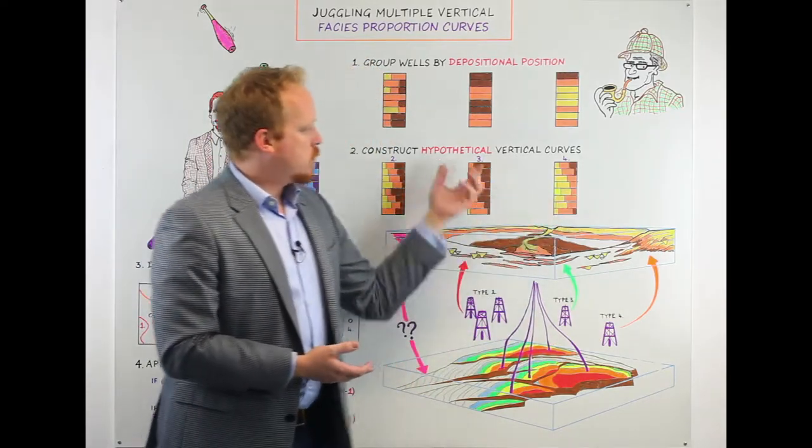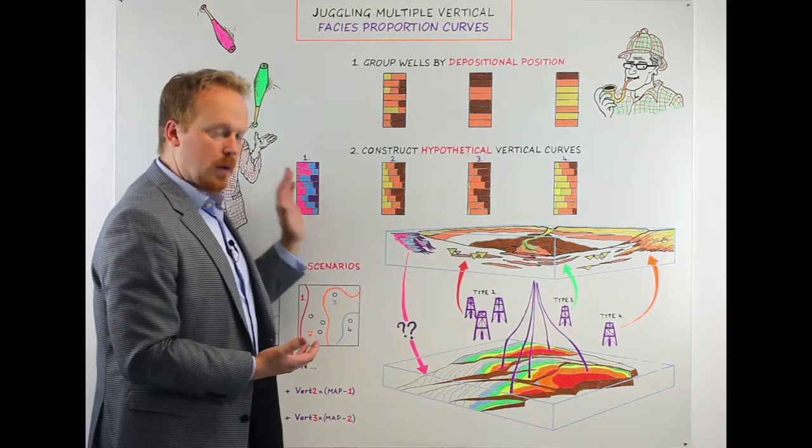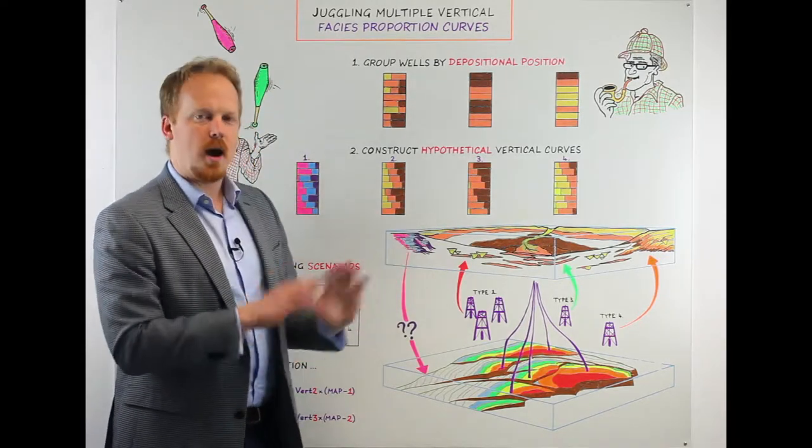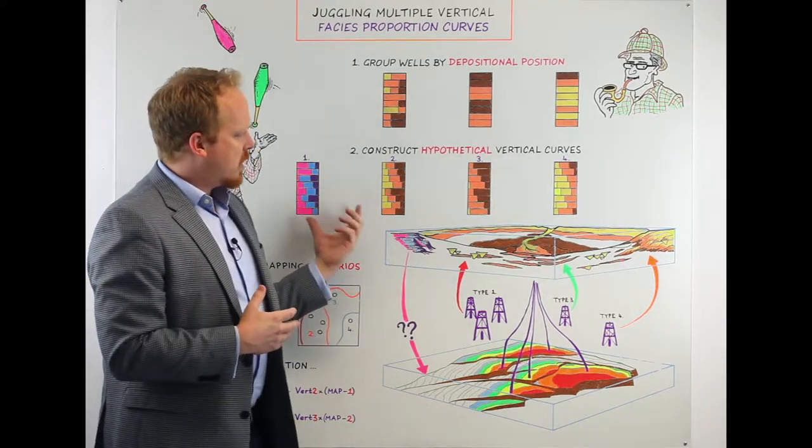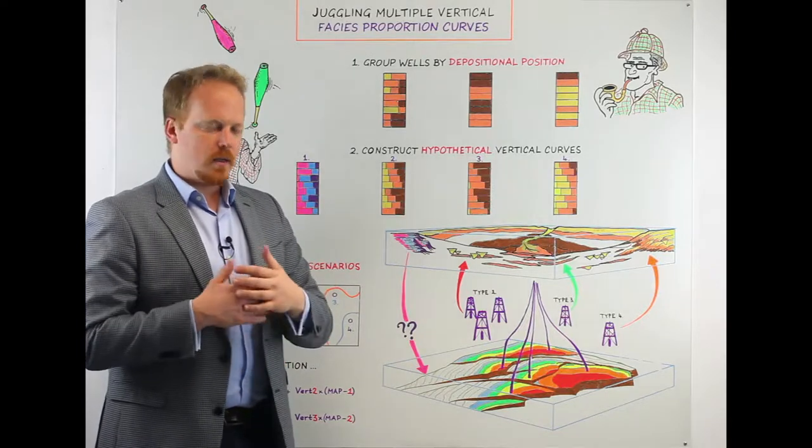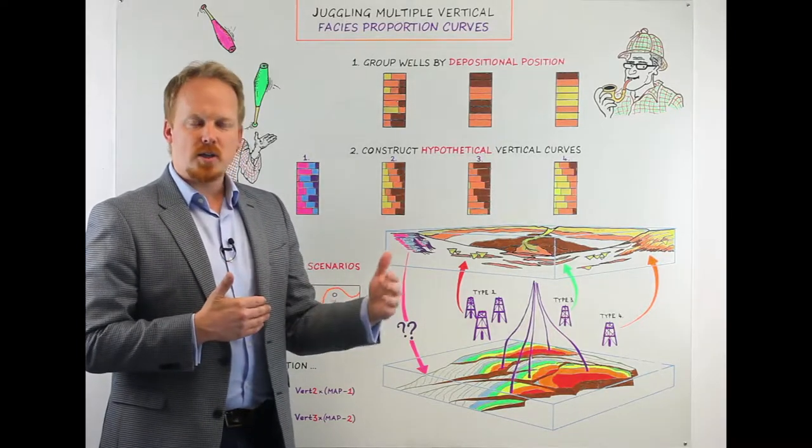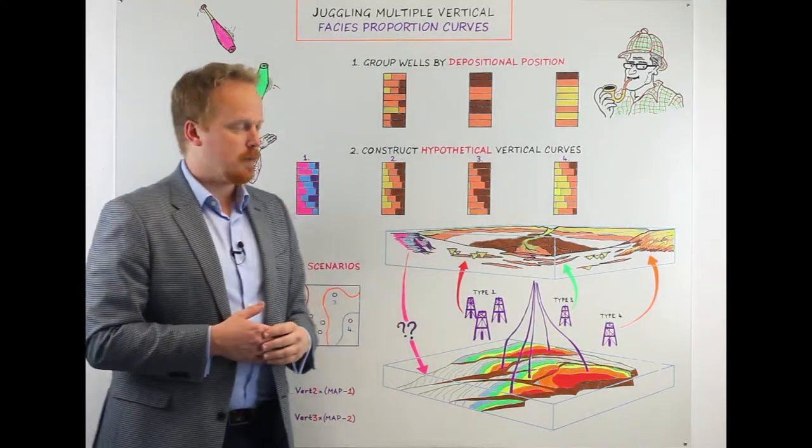We're going to do that for each one of the scenarios that we want to carry, including the one that we haven't sampled. We're going to really base this entirely upon depositional concepts and build vertical curves four times over. These will exist in every IJ column of your grid and will have these percentages of these particular facies types.